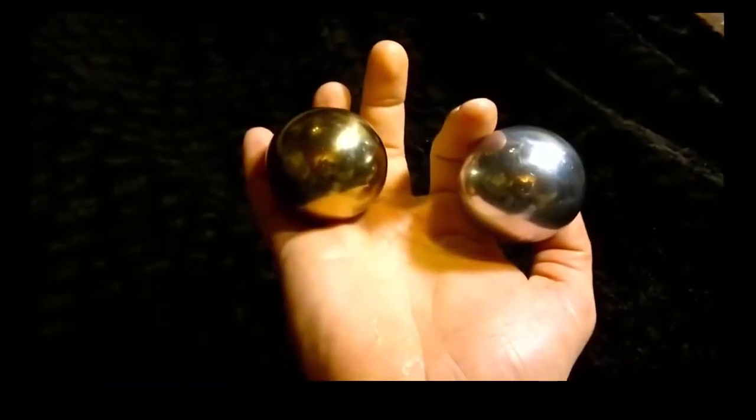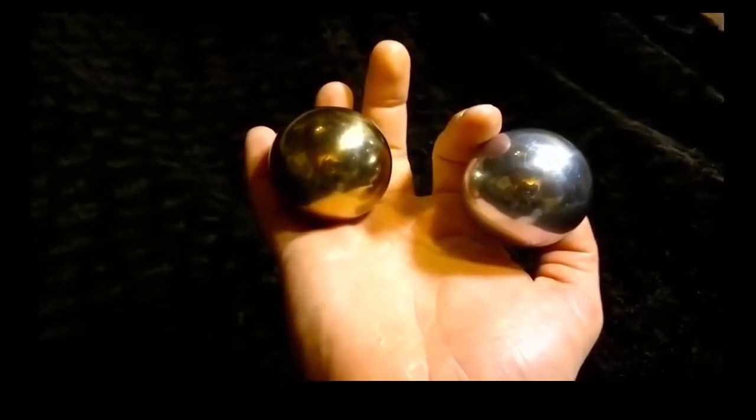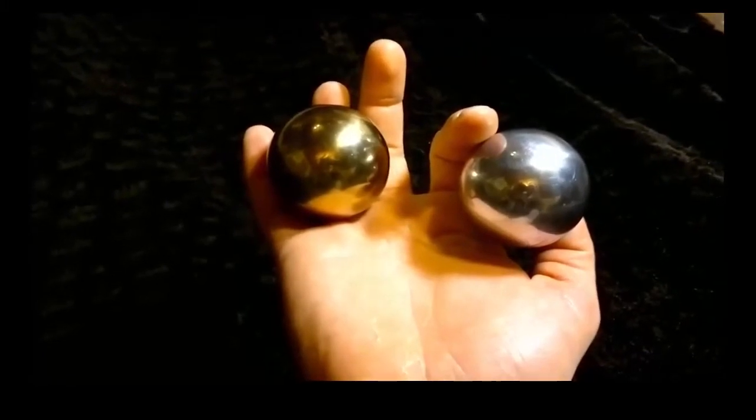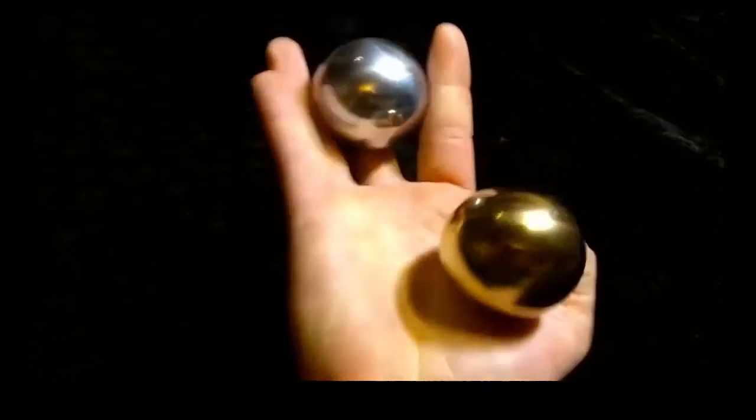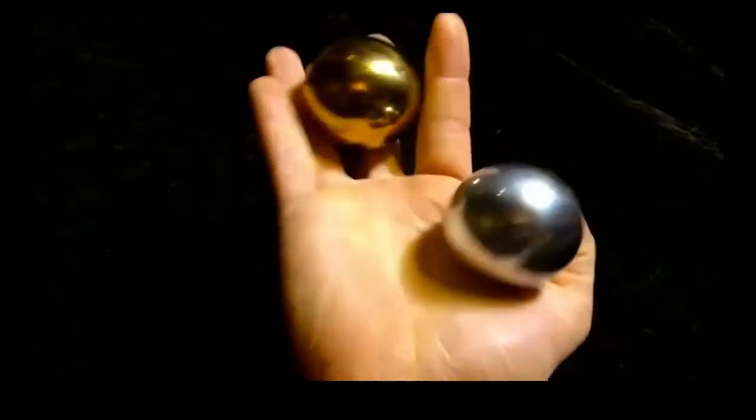And then to do anti-clockwise with your right and clockwise with your left, you need to do the opposite. So grasping from your little finger to your thumb, you rotate it around.